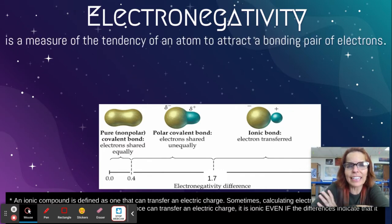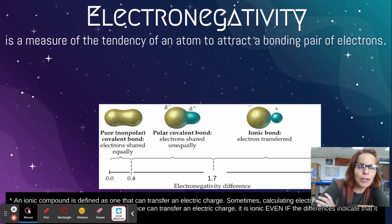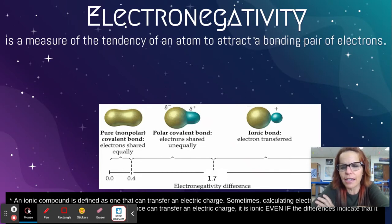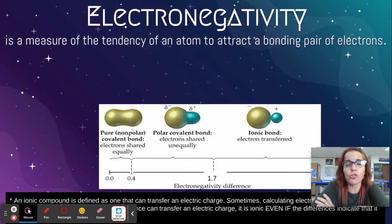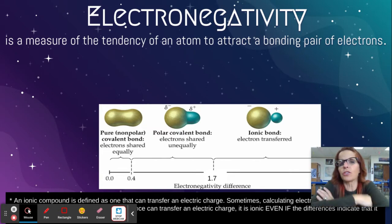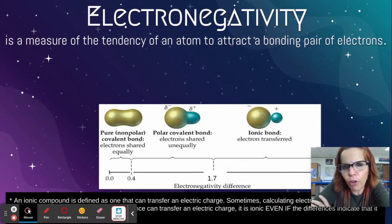So what is electronegativity? Electronegativity is a measure of the tendency of an atom to attract a bonding pair of electrons. I like to think of it as how strong an atom is and how much it's going to pull the electrons toward it and away from another atom.